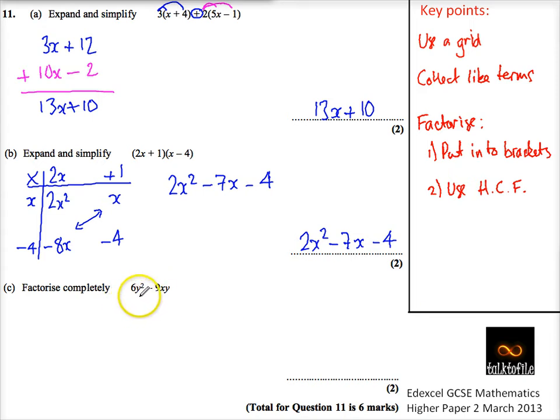Well, the biggest number that goes in both of these, so for me, the highest common factor, biggest number that goes into 6 and 9 is 3, and the biggest letter term, so y squared and y, is a y, that goes into both. So the highest common factor is what's going to go on the outside of my bracket. I'm going to set up my bracket, you know it's going to be a minus in, and my highest common factor goes on the outside.